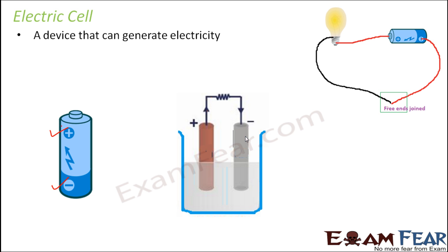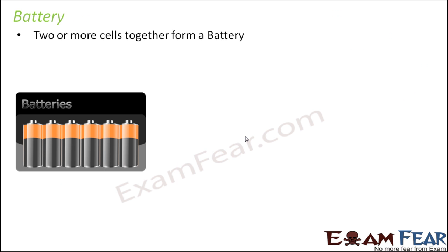There are many different types of cells, and you will learn about how they operate in more detail later. This is basically how a cell is able to generate electricity. Now, how is a battery different from a cell? A cell is one single unit with one positive terminal and one negative terminal. But when two or more cells are connected together, it forms a battery. Sometimes the need for electricity is more, and one single cell might not be able to provide that much, so we combine multiple cells to make a battery that provides more electricity.